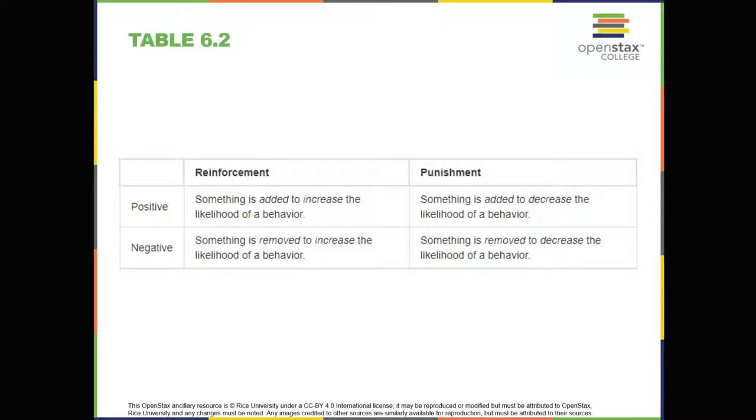Primary reinforcers are reinforcers that have innate reinforcing qualities. These kinds of reinforcers are not learned. Water, food, sleep, shelter, sex, and touch, among others, are all primary reinforcers. Pleasure is also a primary reinforcer. Organisms do not lose their drive for these things.